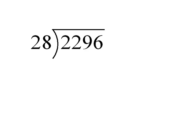So let's look at this first problem here. We have 2,296 divided by 28. And just as a refresher, this number underneath this housetop is called the dividend, and the 28 is called the divisor. We're going to be finding the quotient, or the answer.